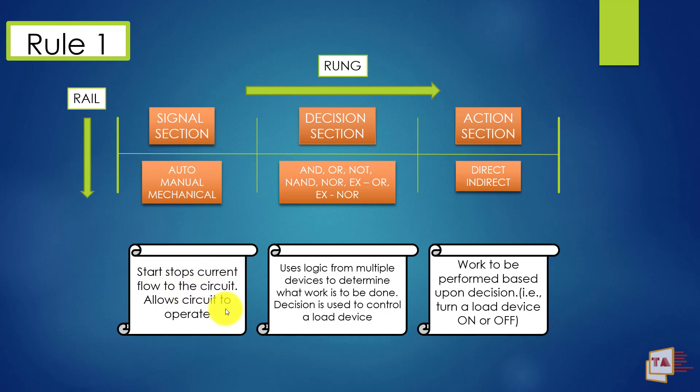Signal section represents auto, manual, and mechanical. Here is the description: start stops current flow to the circuit, allows circuit to operate. If you want to operate the circuit, then this signal section should be enabled using these signals like start push button, stop push button. Using that signals, we can operate this circuit.